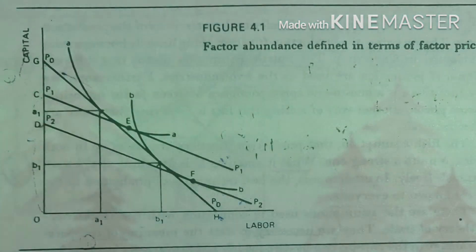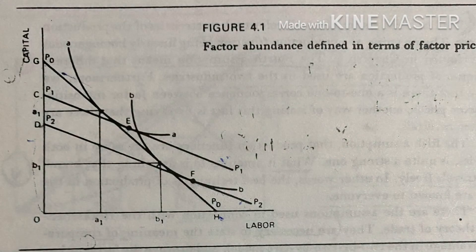Now let us show that country one will export the capital-intensive good and that country two will export the labor-intensive good. This can be easily demonstrated with the help of a figure. We start with two isoquants AA and BB which characterize the production functions and are the same in both countries.